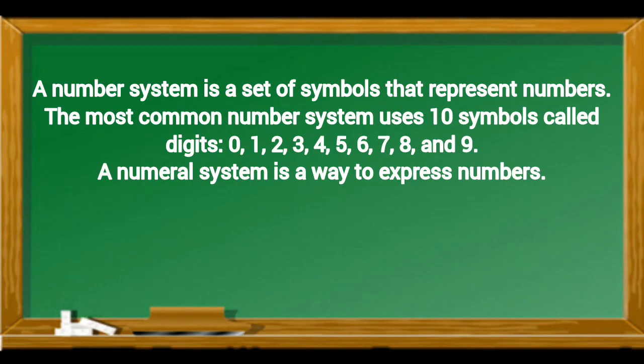A number system is a set of symbols that represent numbers. The most common number system uses 10 symbols called digits: 0, 1, 2, 3, 4, 5, 6, 7, 8, and 9. A numeral system is a way to express numbers.